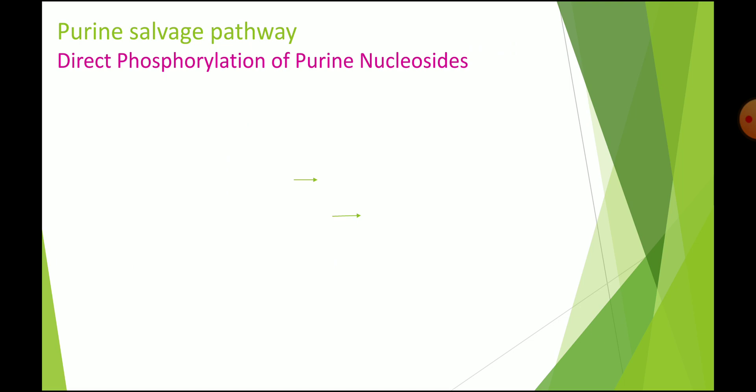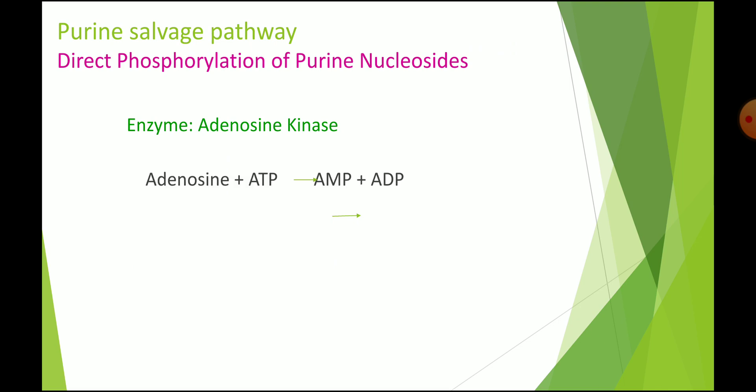The second method is by direct phosphorylation of the purine nucleosides. Phosphorylation is catalyzed by the enzyme kinases. Adenosine kinase transfers a phosphate group — obtained from ATP — to adenosine (a nucleoside) to form AMP, generating ADP. Deoxy-adenosine can also be converted to dAMP by the action of adenosine kinase using ATP as the phosphate donor.